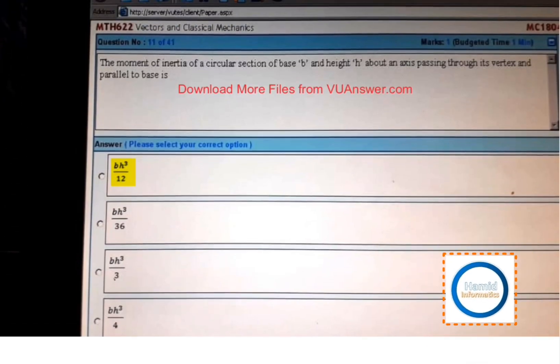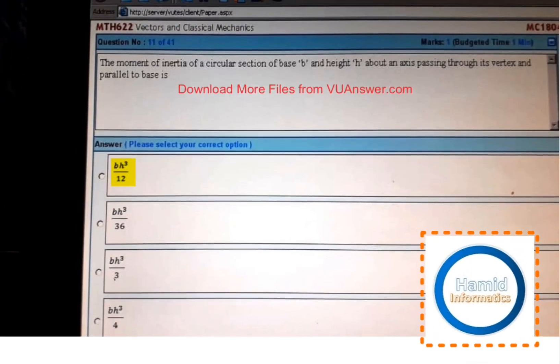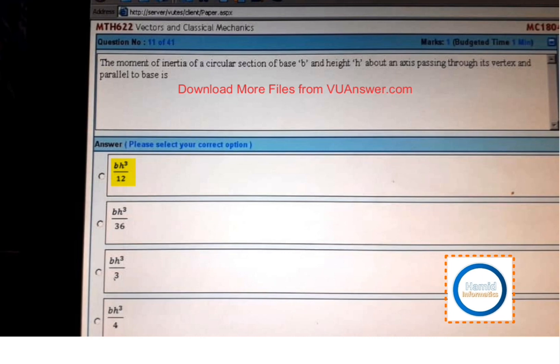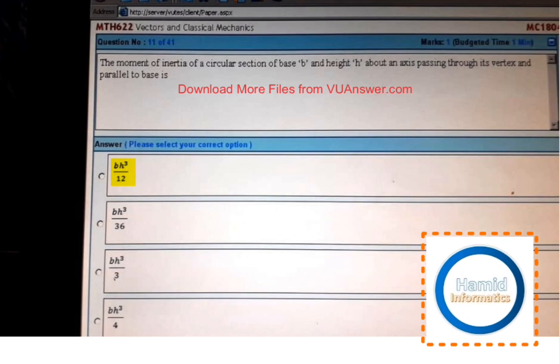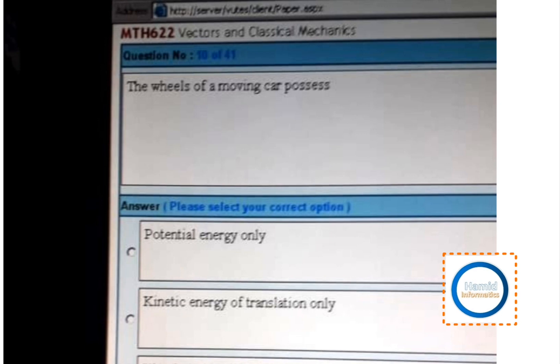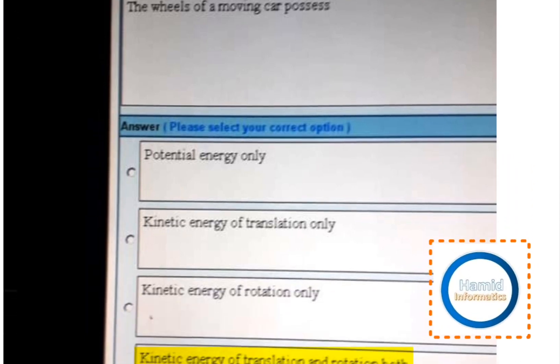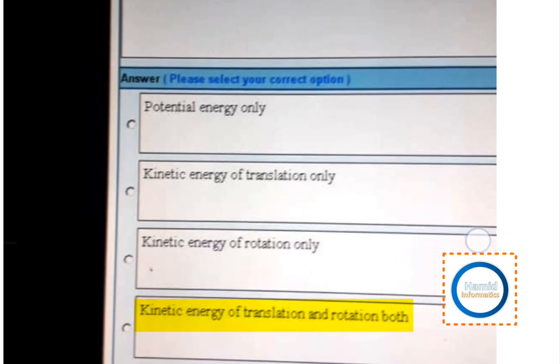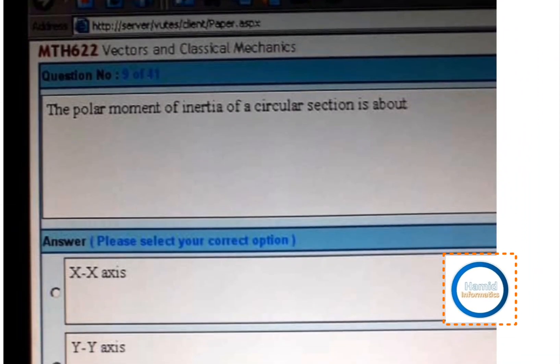Next, the moment of inertia of a circular section of base b and height h about the axis passing through its vertex and parallel to base is bh cubed divided by 12. The wheel of a moving car possesses kinetic energy of translation and rotation both.